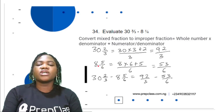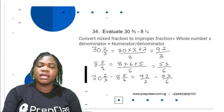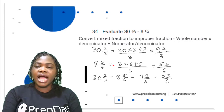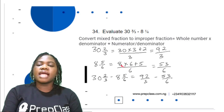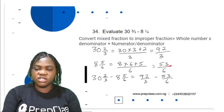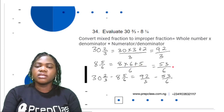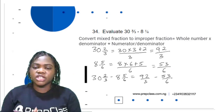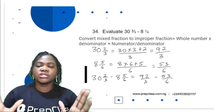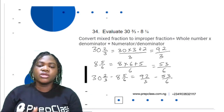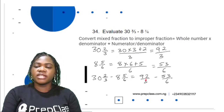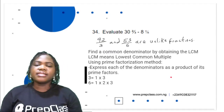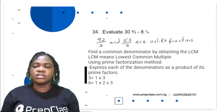For 8 and 5/6: (8 × 6 + 5) ÷ 6 = 53/6. So the expression becomes 92/3 − 53/6. These are unlike fractions — they don't have the same denominator — so we need to find a common denominator using the LCM.